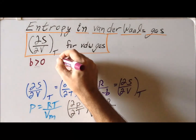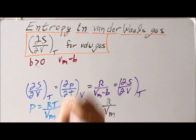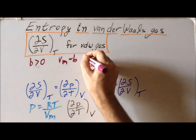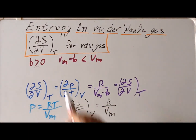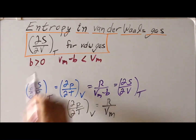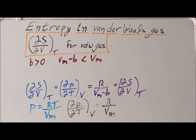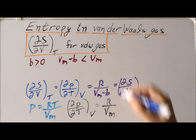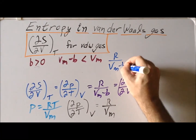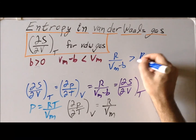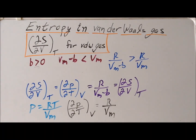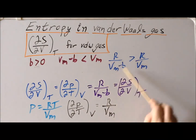If b is greater than zero, then V_M minus b is less than V_M. Since V_M is a positive value and we subtract a positive quantity from it, we have V_M greater than (V_M minus b). This tells us that R divided by (V_M minus b) is greater than R divided by V_M. Therefore, the entropy of the van der Waals gas increases faster with increasing volume than that of the ideal gas.